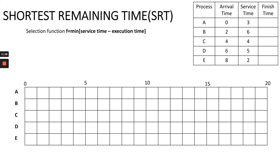Whenever a new process joins the ready queue, if that process has a shorter remaining time than the currently running process, the process with the shorter remaining time will interrupt the current process and run instead.